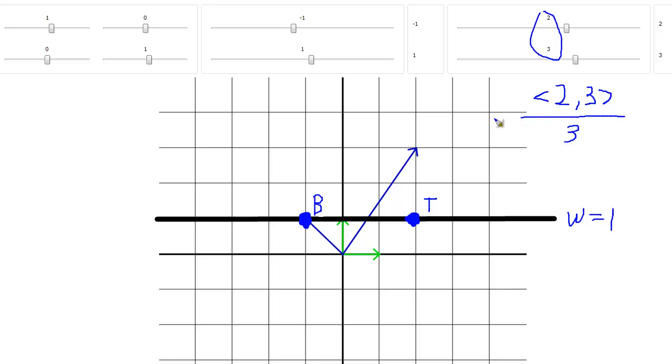To get this three to a one, I have to divide it by three. But if I do that to this component, I also have to do it to this component. Does that make sense? Anytime we do something to one side or the equal side, we have to do it to the other. That's how we say it in algebra. Same thing with these vectors. If I want to bring this to a one, and I do, then I need to divide it by a three.